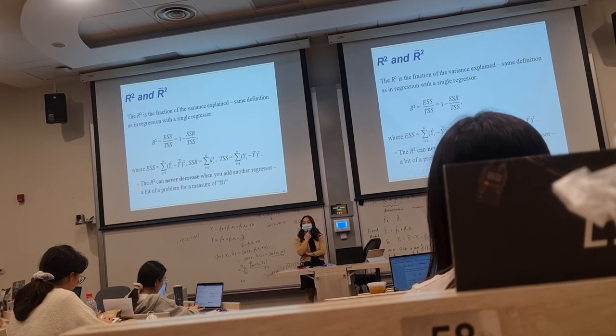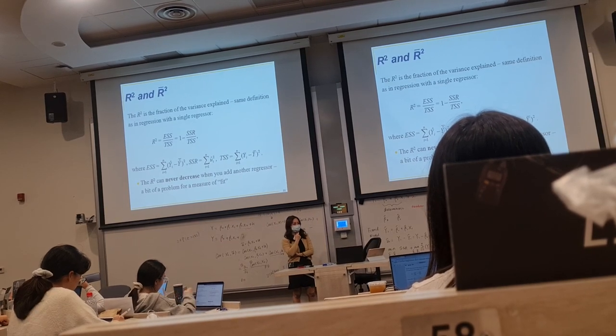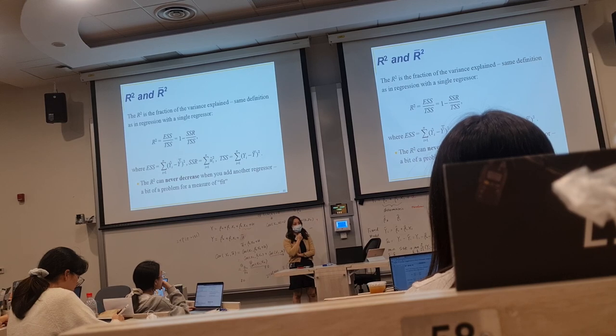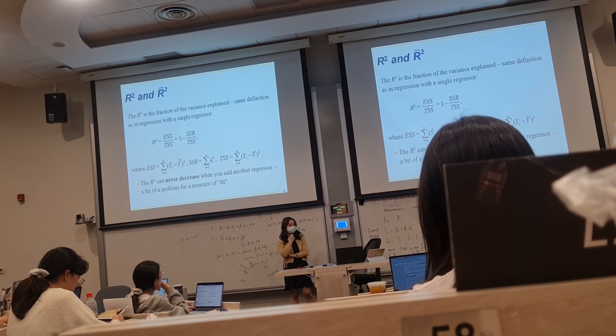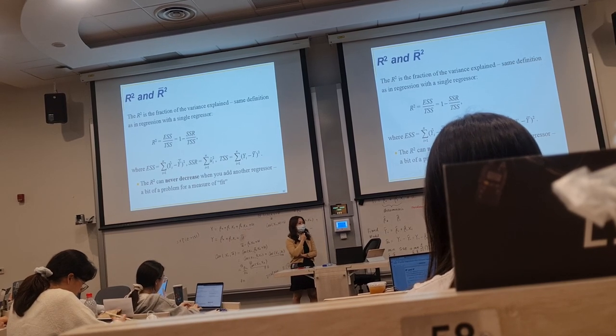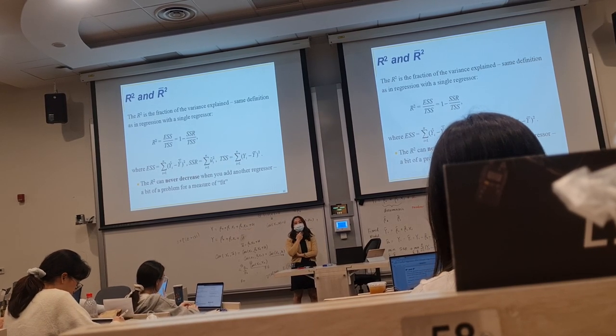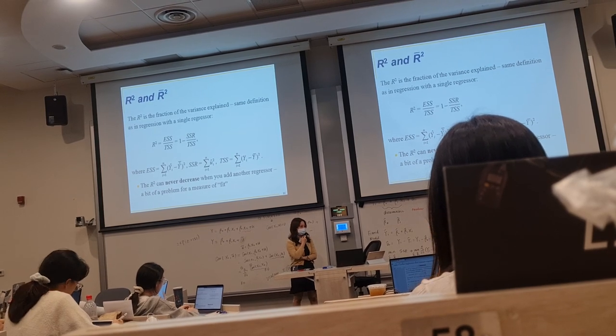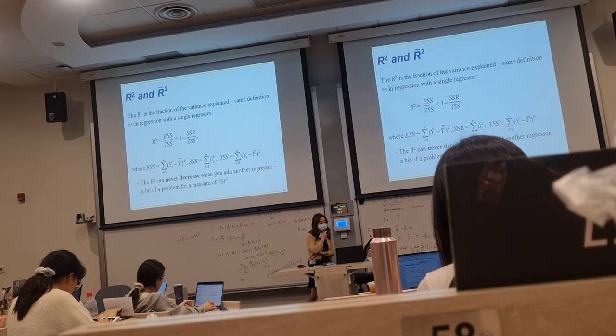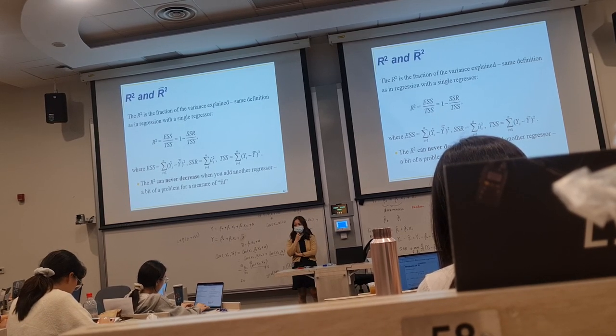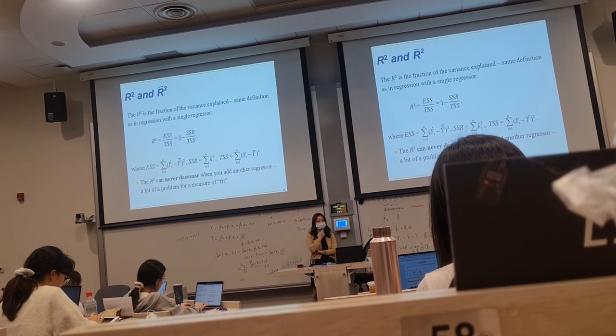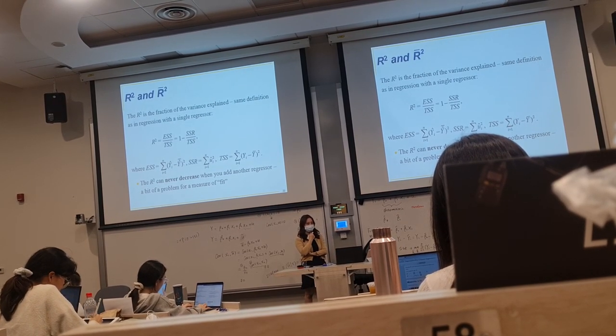So if we just simply compare the model 1 with two regressors that are useful, and the model 3 adding a useless regressor x3, compare the R squared of these two models, they are exactly the same. So just by looking at R squared, I don't know which one is better. So this is the drawback of R squared for multiple regressions, because it never decreases even with continuously adding some useless factors in the model.